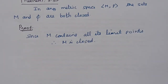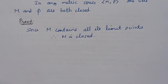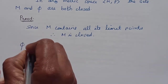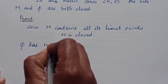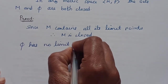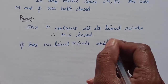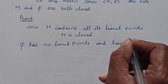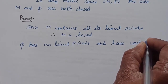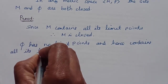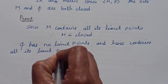Now prove that the empty set is closed. The empty set has no elements, so it has no limit points. Since the empty set has no limit points, it vacuously contains all its limit points. Hence the empty set contains all its limit points.